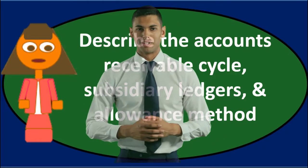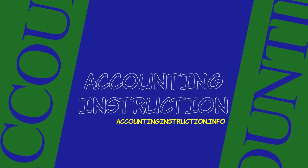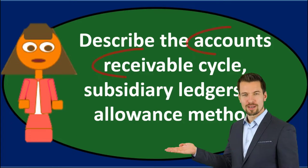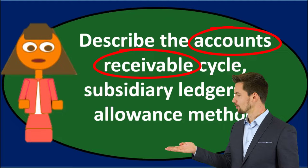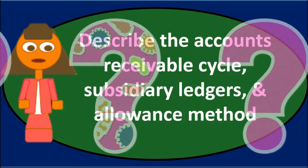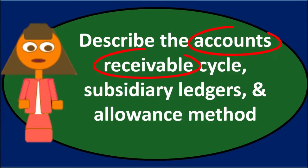In this discussion, we will address the question: describe the accounts receivable cycle, subsidiary ledgers, and allowance method. We're talking about accounts receivable and related activities. If given an essay question like this, we could start with what accounts receivable is, then go into the problems related to accounts receivable, which are solved by things such as a subsidiary ledger and an allowance method.